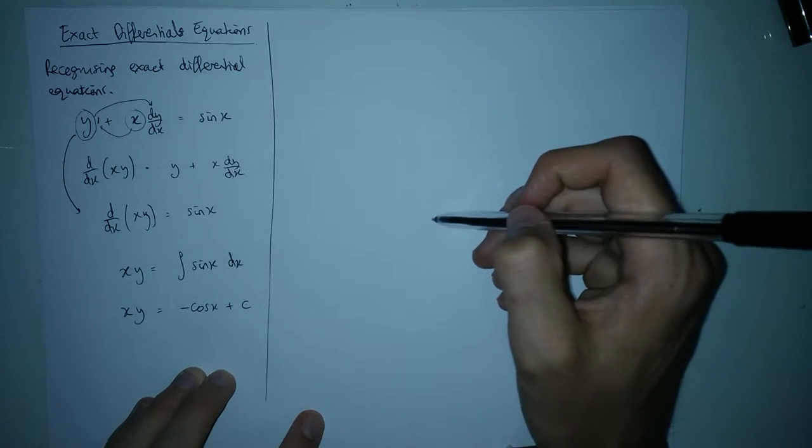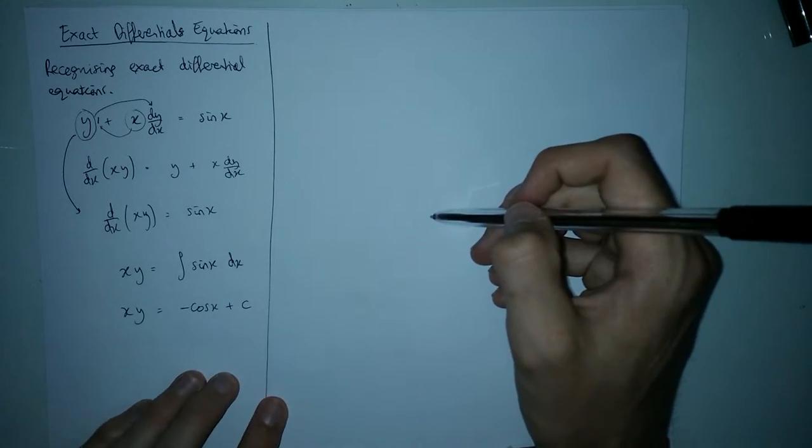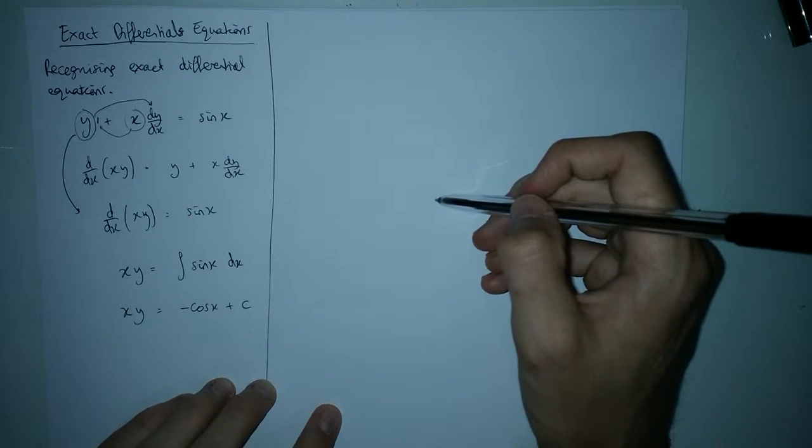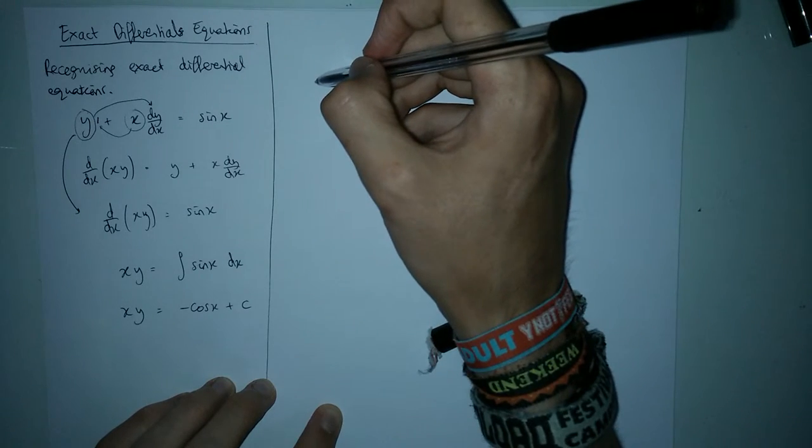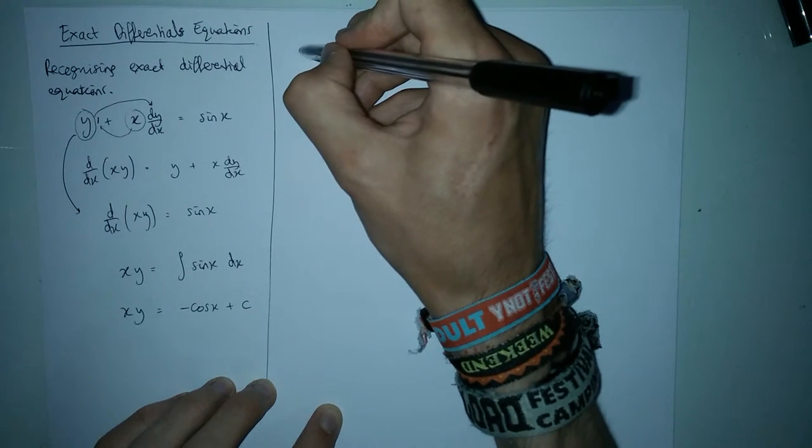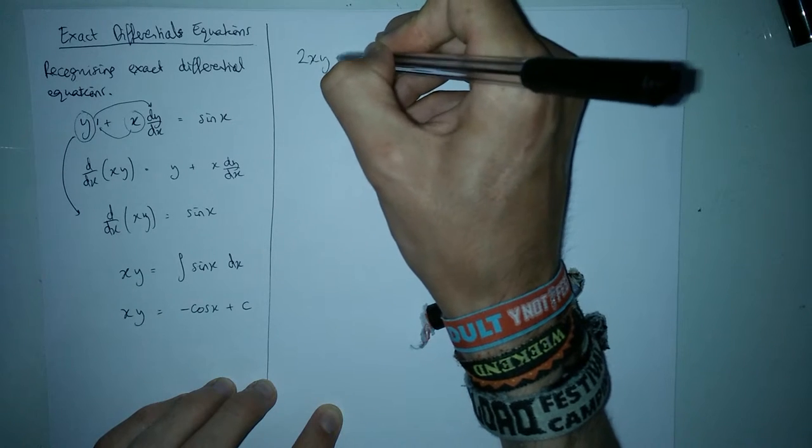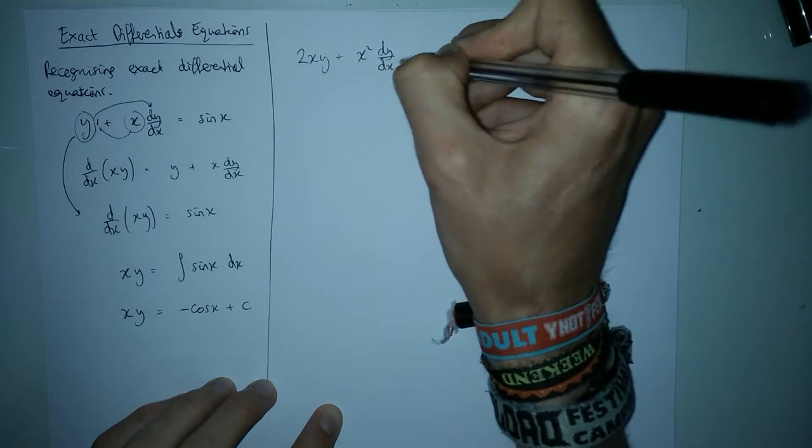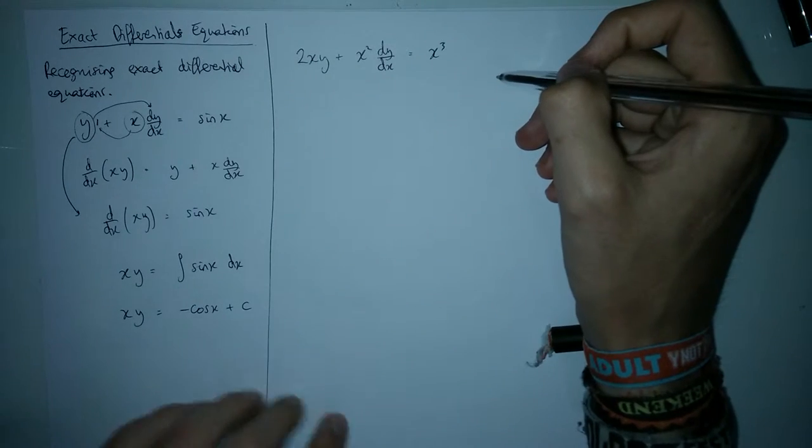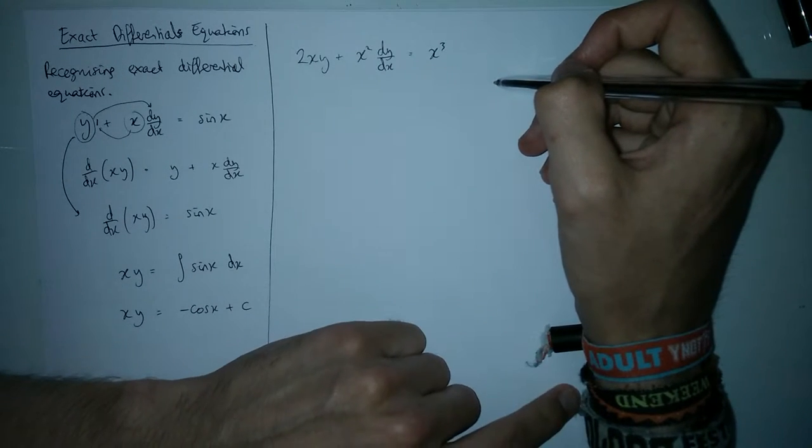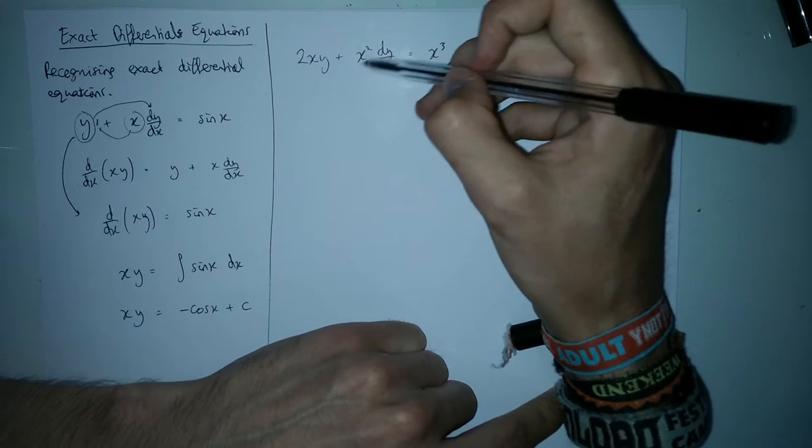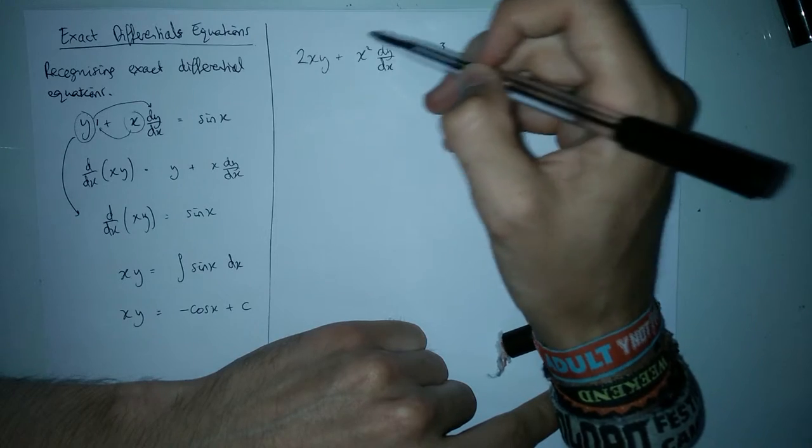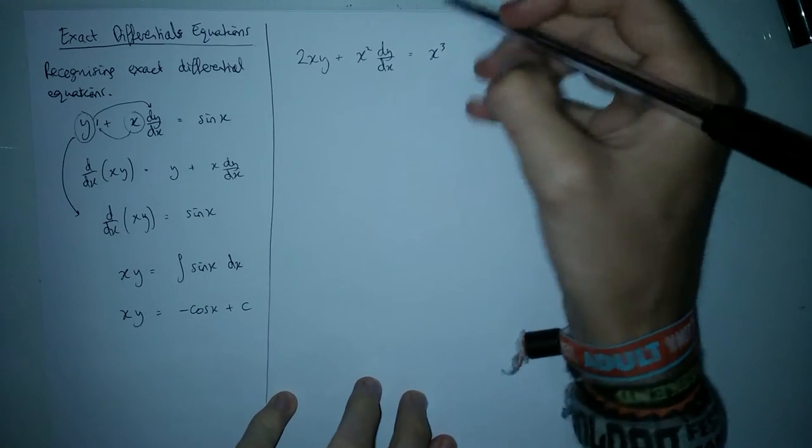I'm going to show you a couple more examples where we sort of magically know the answer and then I'm going to talk about how we would do it if we weren't blessed with the fact that we wrote the question. So here's your second exact differential equation. Generally what you look at is you look at this bit here next to the dy dx and see does that differentiate to give this bit and does the bit next to here differentiate to give this bit.